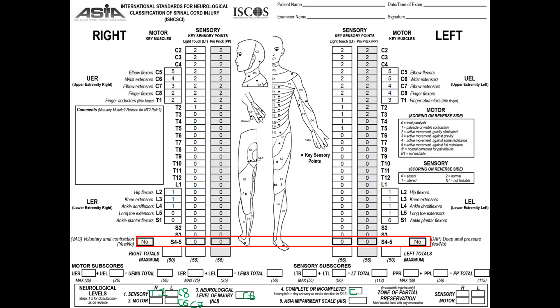Accordingly, we immediately specify that it is ASIA A. Now, do we need to specify the zone of partial preservation? We check — here it's none — so yes, we need to specify the zone of partial preservation.